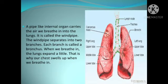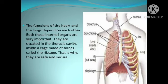A pipe-like internal organ carries the air we breathe in into the lungs; it is called the windpipe. The windpipe separates into two branches, and each branch is called a bronchus. When we breathe in, the lungs expand a little — that's why our chest swells up when we breathe in. The functions of the heart and the lungs depend on each other. Both are situated in the thoracic cavity, inside a cage made of bones called the ribcage, which keeps them safe and secure.